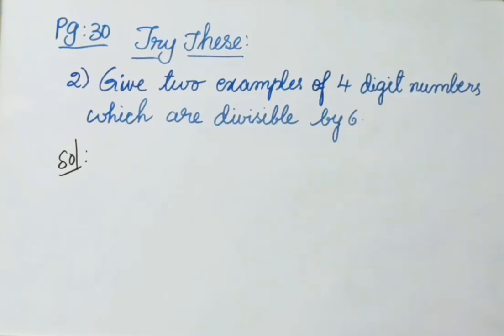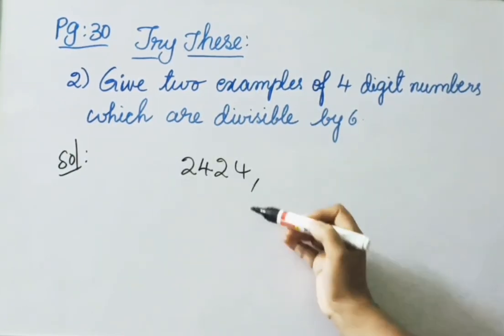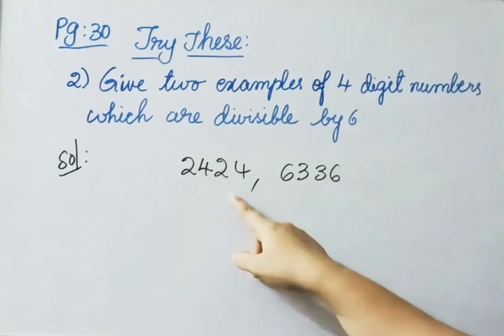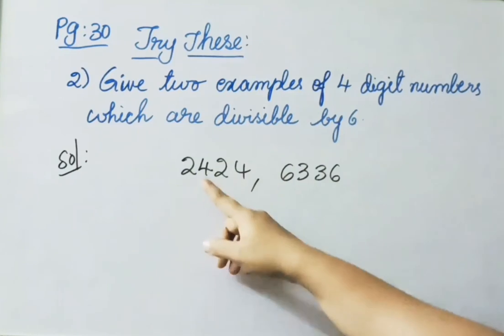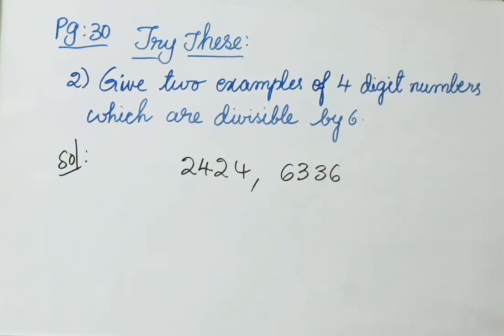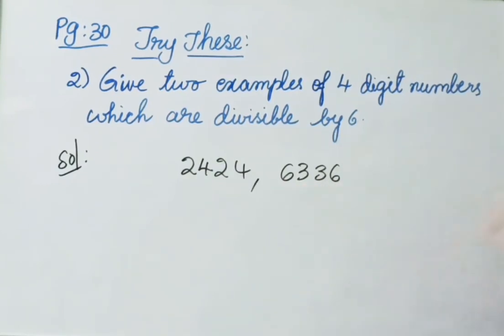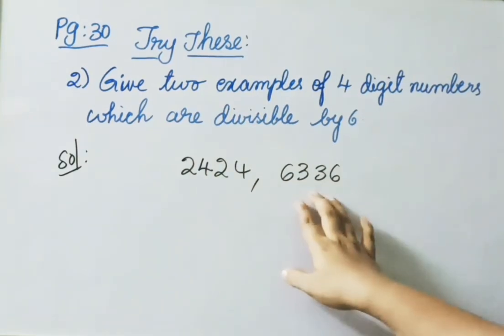Second question: Give two examples of four-digit numbers divisible by 6. Examples: 2424 and 6336. For 2424, ones place is 4 so divisible by 2; digit sum is 2 plus 4 plus 2 plus 4 equals 12, a multiple of 3, so divisible by 3. Therefore 2424 is divisible by 6. For 6336, ones place is 6 so divisible by 2; digit sum is 6 plus 3 plus 3 plus 6 equals 18, a multiple of 3. So 6336 is also divisible by both 2 and 3, and therefore divisible by 6.